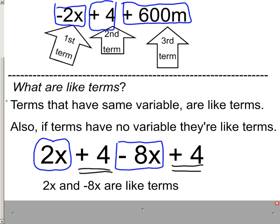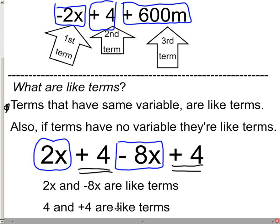So here it is in writing. The terms that have the same variable are like terms. But also, if they have no variable, like see this 4 has no variable? Well, neither does this 4. Because they have no variable, we can say that the 4 and positive 4 are like terms.